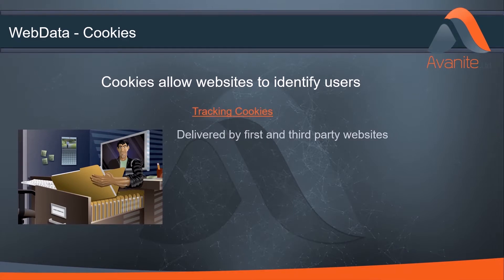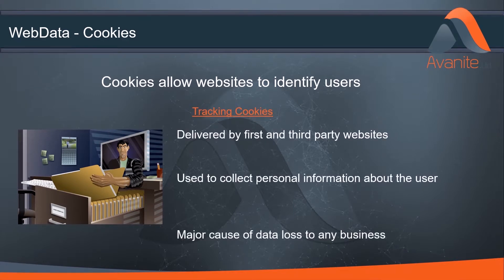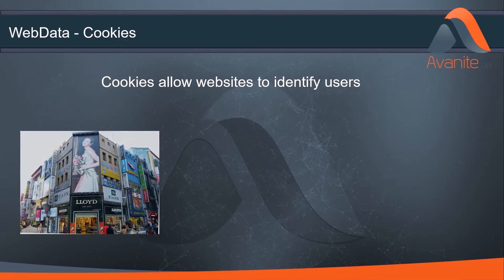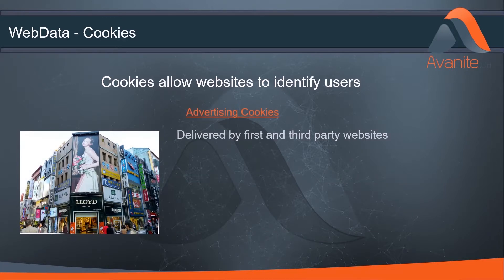Tracking cookies are one of the most common form of cookies found on a user's machine. Websites place these cookies down to track user behavior. Tracking cookies are one of the major reasons for data loss in any business today. Advertising cookies take the data gathered by the tracking cookies and then use this to send targeted adverts down to the user.